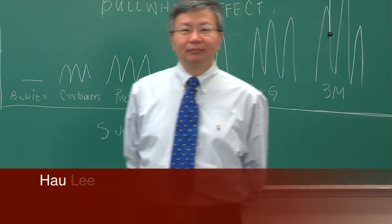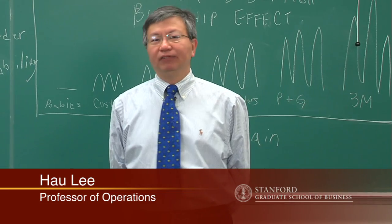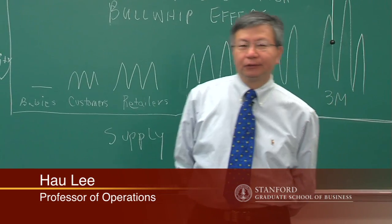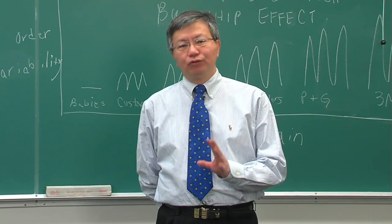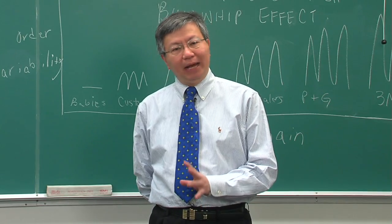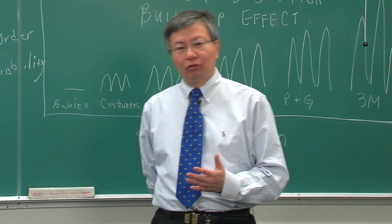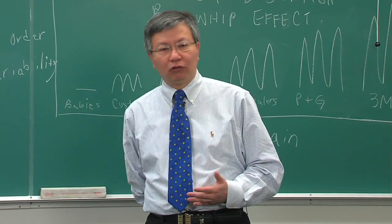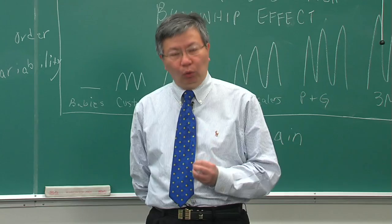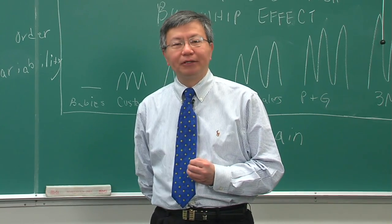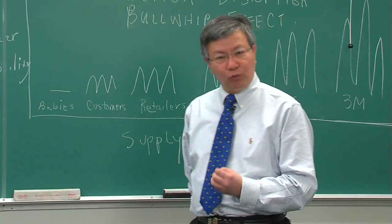The bullwhip effect is a very common phenomenon in all supply chains. It is about the amplification and distortion of demand information. As you observe in the market, demand can fluctuate a small bit, but as every player in the supply chain makes decisions based on forecasting, inventory control, and speculation, all those interactions result in demand forecasts and orders being amplified as you go up the supply chain.